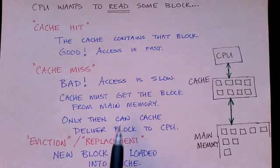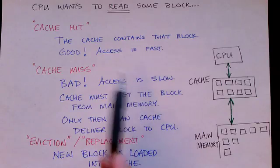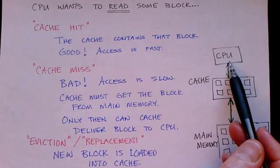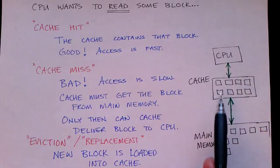If it's in the cache, then we have a cache hit. The cache contains that block. This is a good thing because then the cache can return that data directly to the CPU and it can do that fast. So that's a fast access.